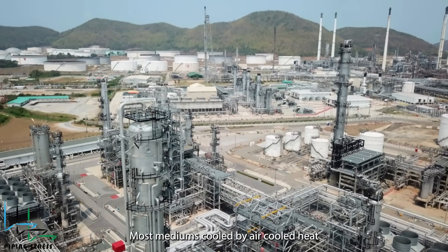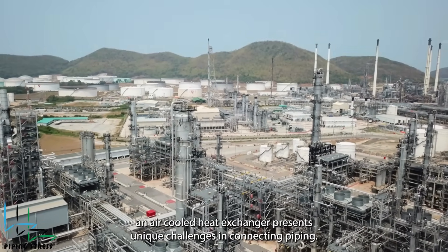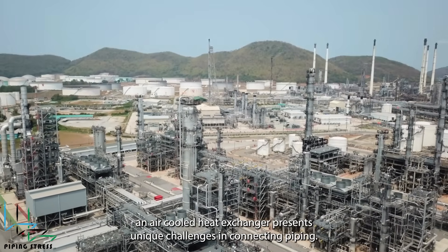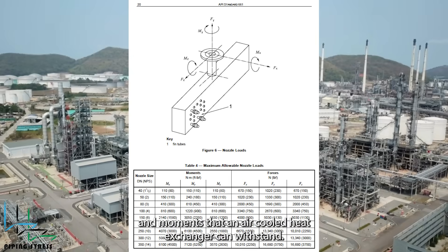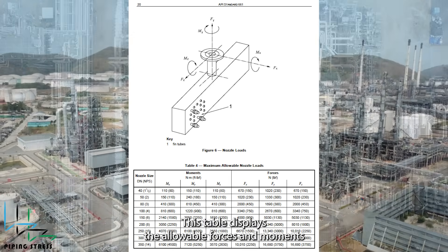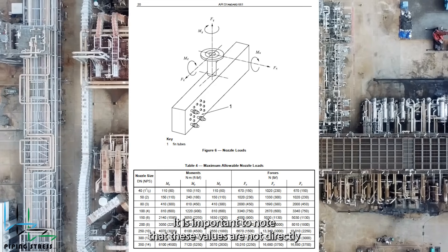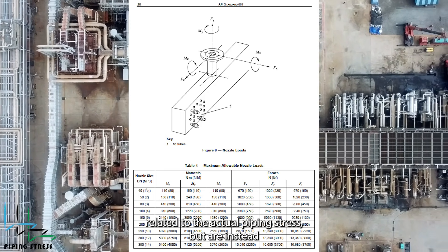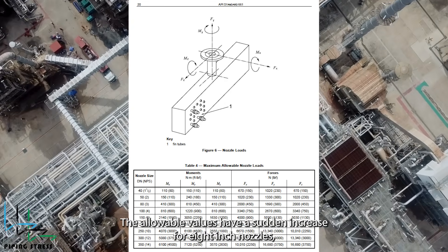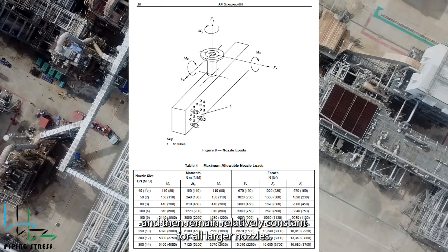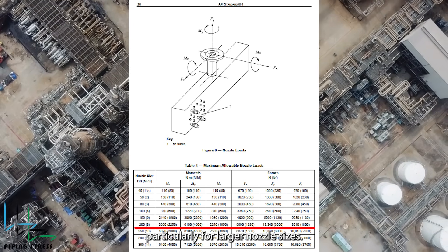Most mediums cooled by air-cooled heat exchangers are at low temperatures, and some are also at low pressure. As a result of its low temperature and pressure, an air-cooled heat exchanger presents unique challenges in connecting piping. The primary concern for piping engineers is the allowable forces and moments that an air-cooled heat exchanger can withstand. This table displays the allowable forces and moments for air-cooled heat exchanger nozzles as specified by API Standard 661. These values are not directly related to actual piping stress, but are instead based on practical and economic considerations. The allowable values have a sudden increase for 8-inch nozzles and then remain relatively constant for all larger nozzles; however, meeting these allowable values can be very challenging, particularly for larger nozzle sizes.